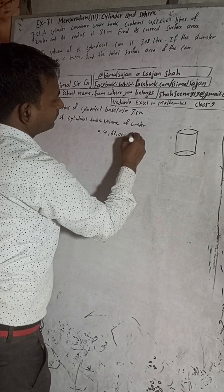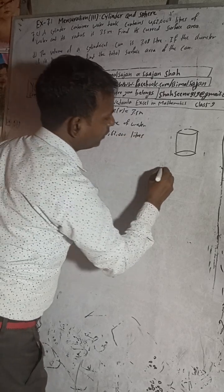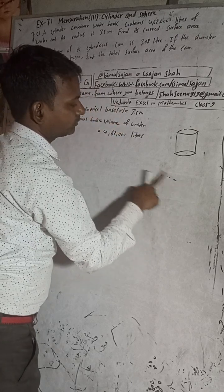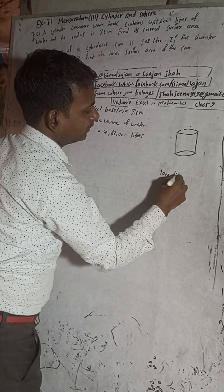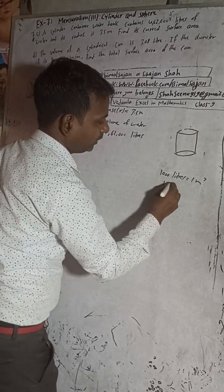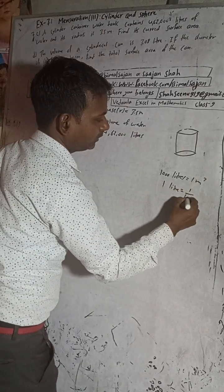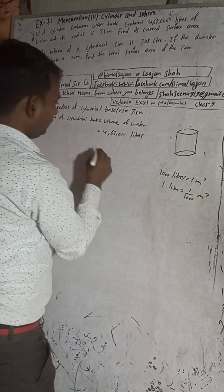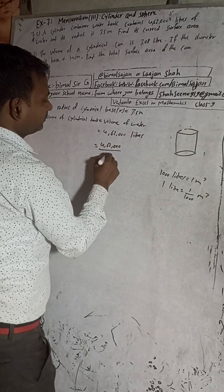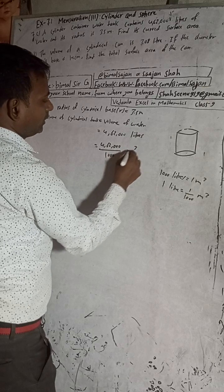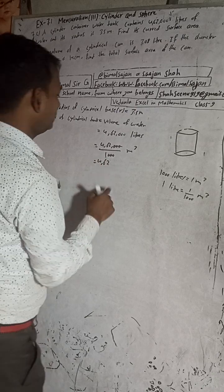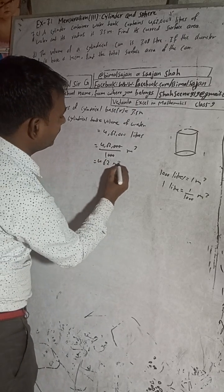We know that 1000 liters is equal to 1 cubic meter. So 4,62,000 liters is equal to 462 cubic meters.